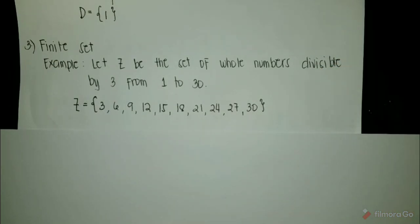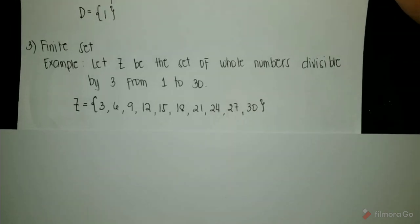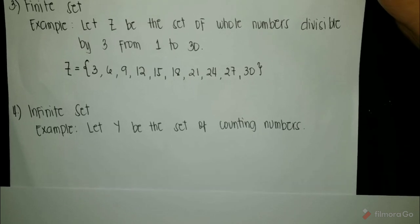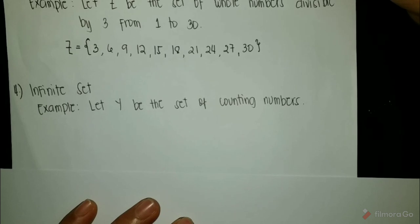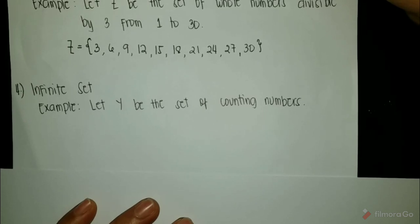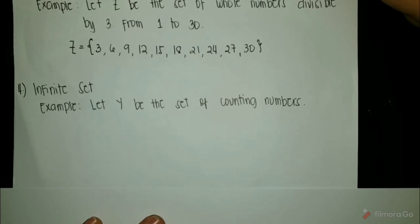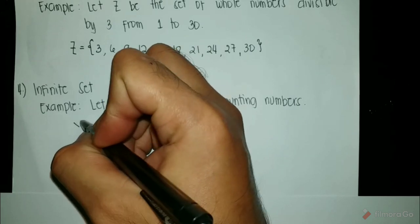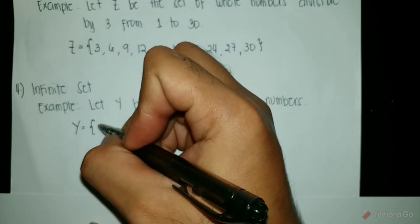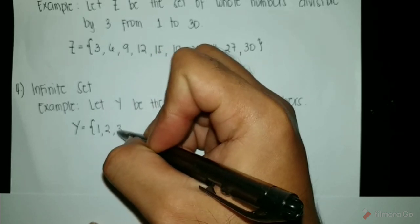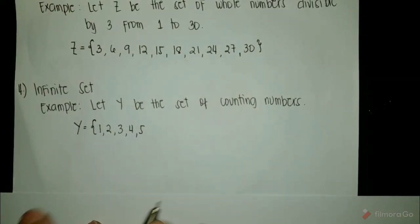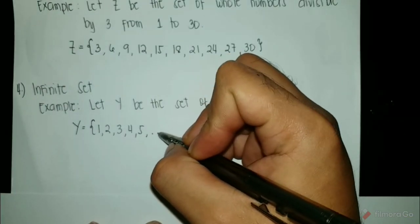The next one will be the infinite set, which is the reverse of the finite set. An infinite set is a set containing a never-ending set. For example, let Y be the set of counting numbers. The elements are 1, 2, 3, 4, 5, and so on. Since it is impossible to write all the counting numbers, we denote it by an ellipsis.